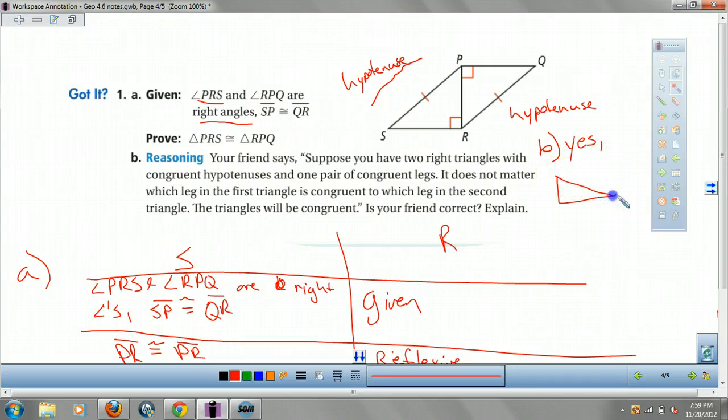Because it's just, you know, hypotenuse and a leg. You know, I could just draw it like this. You know, you still have a hypotenuse and a leg. So those two triangles are still congruent. They're just flipped. They're just rotated.